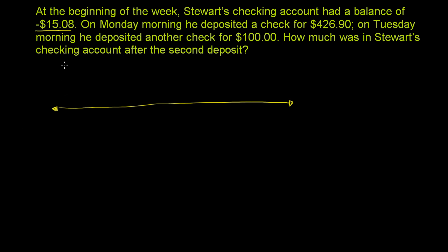He starts with negative $15.08 in his balance. If this is 0 over here, he starts with a negative number — shown in red to indicate he's overdrawn. So he's 15 and 8 hundredths to the left of 0. The length of this arrow is the absolute value, which is 15.08.